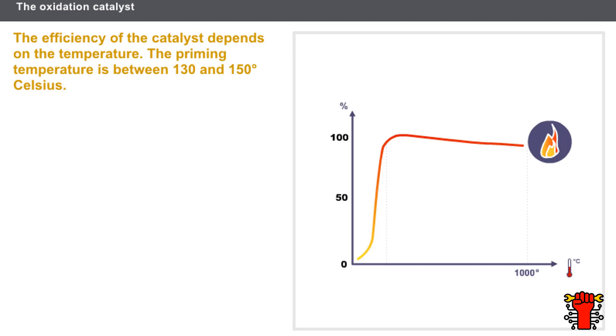However, over 1000 degrees, the ceramic material is destroyed. The priming temperature is between 130 and 150 degrees Celsius.